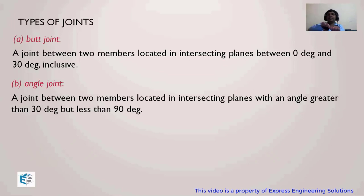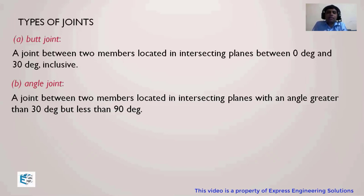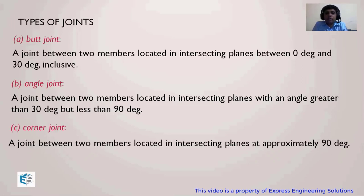If the angle is more than 30 degrees but less than 90 degrees, we call it an angle joint. The definition of an angle joint is a joint between two members located in intersecting planes with an angle greater than 30 degrees but less than 90 degrees. And if the angle is approximately 90 degrees, it is called a corner joint.